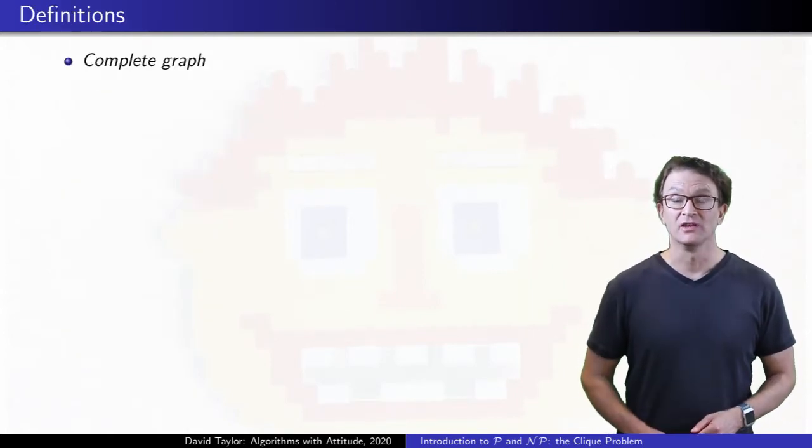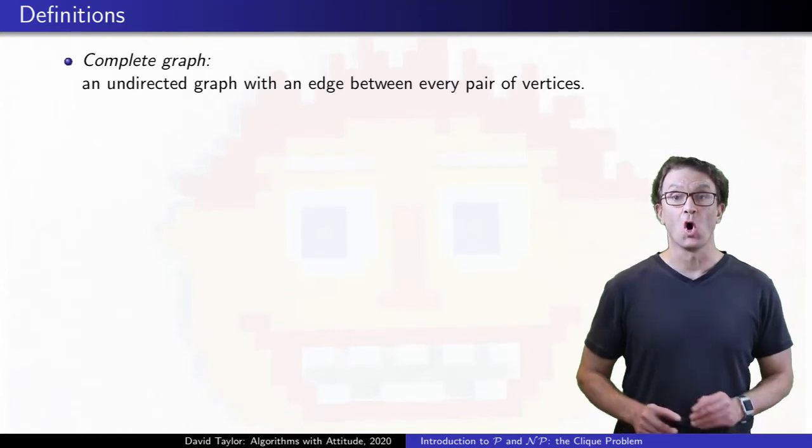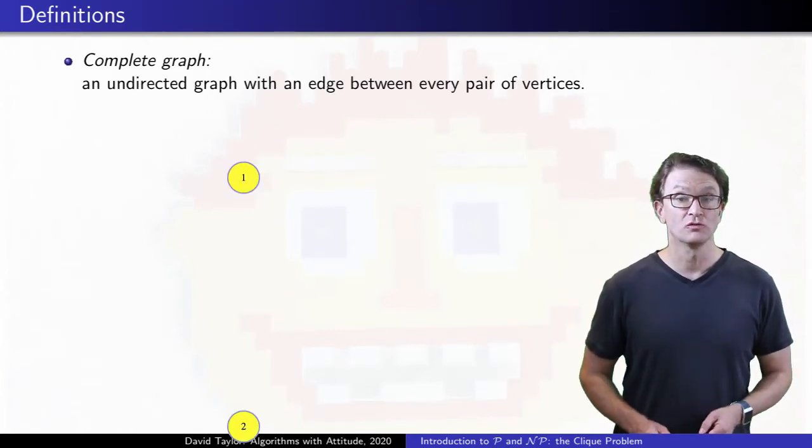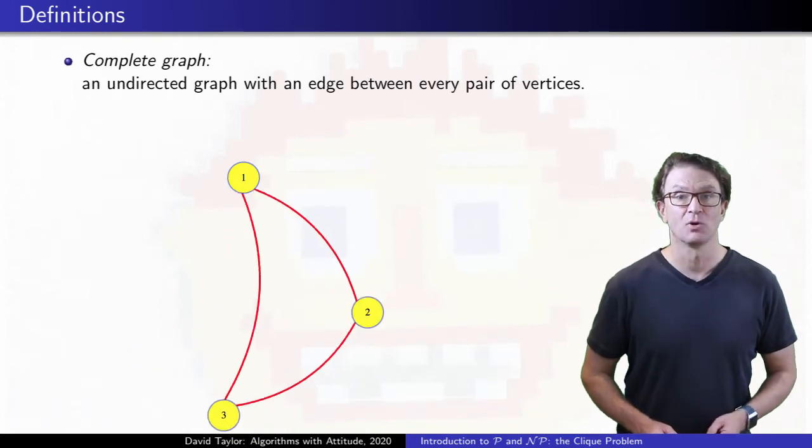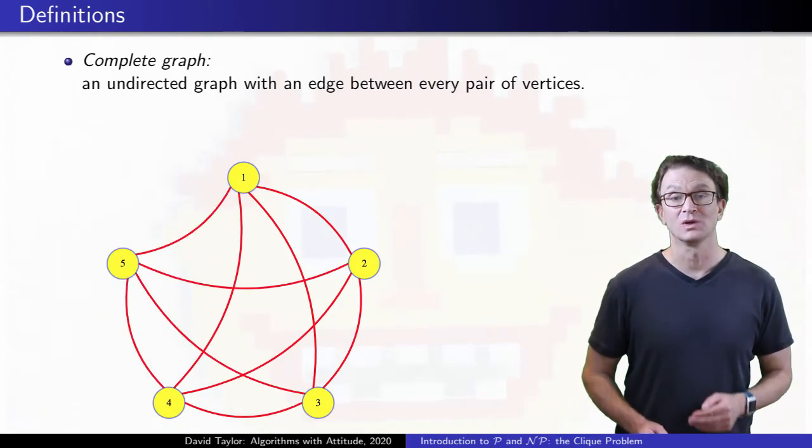A complete graph is an undirected graph with all of the edges. If it has 0, 1, or 2 vertices, that doesn't tell you much, but once we get to bigger graphs, we can see the structure.